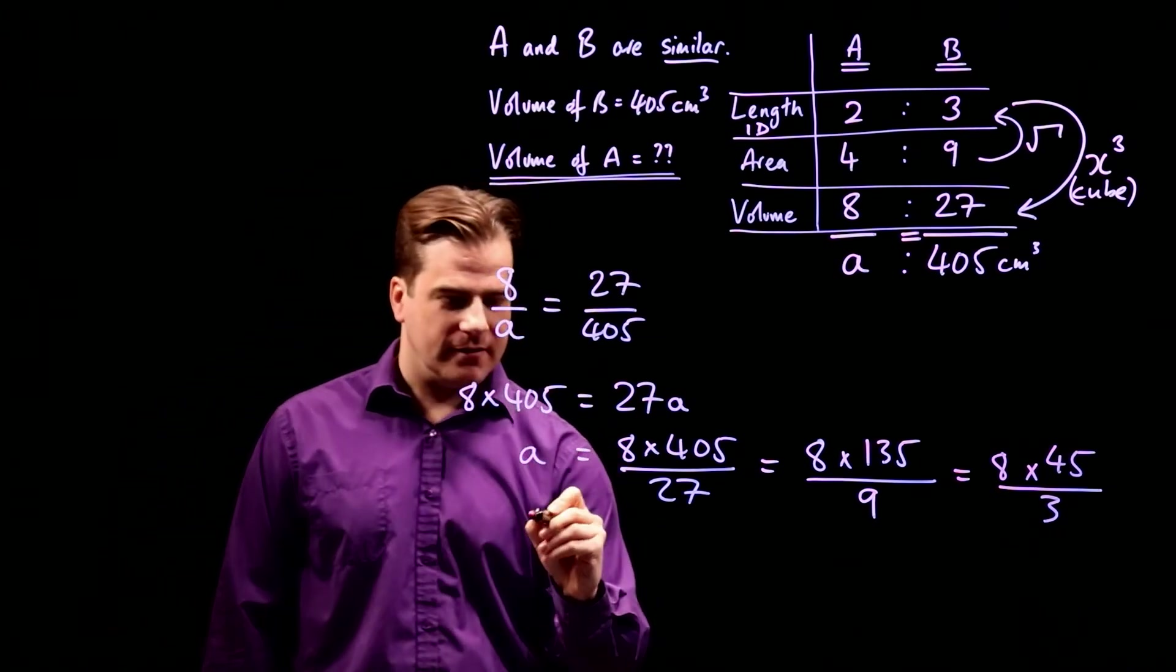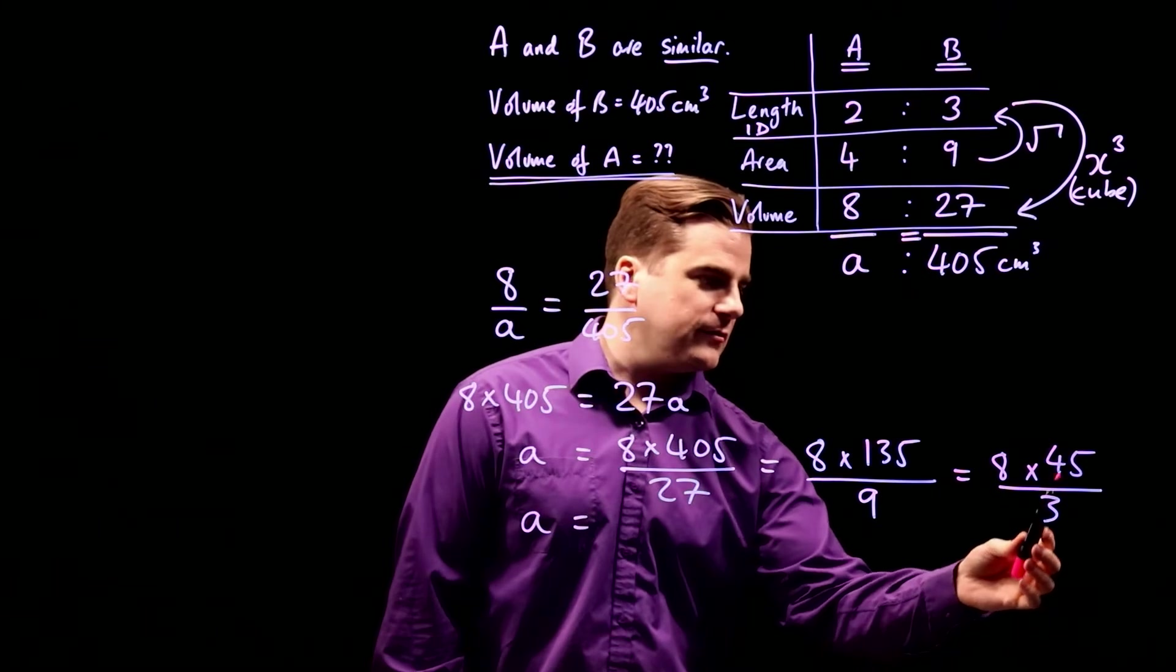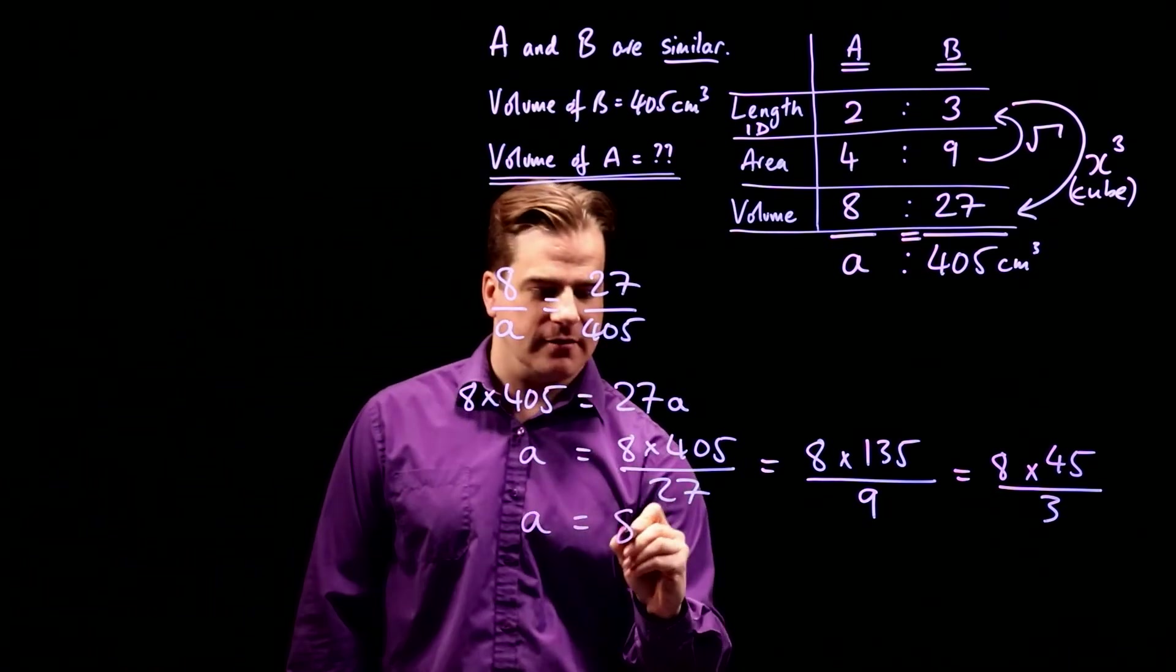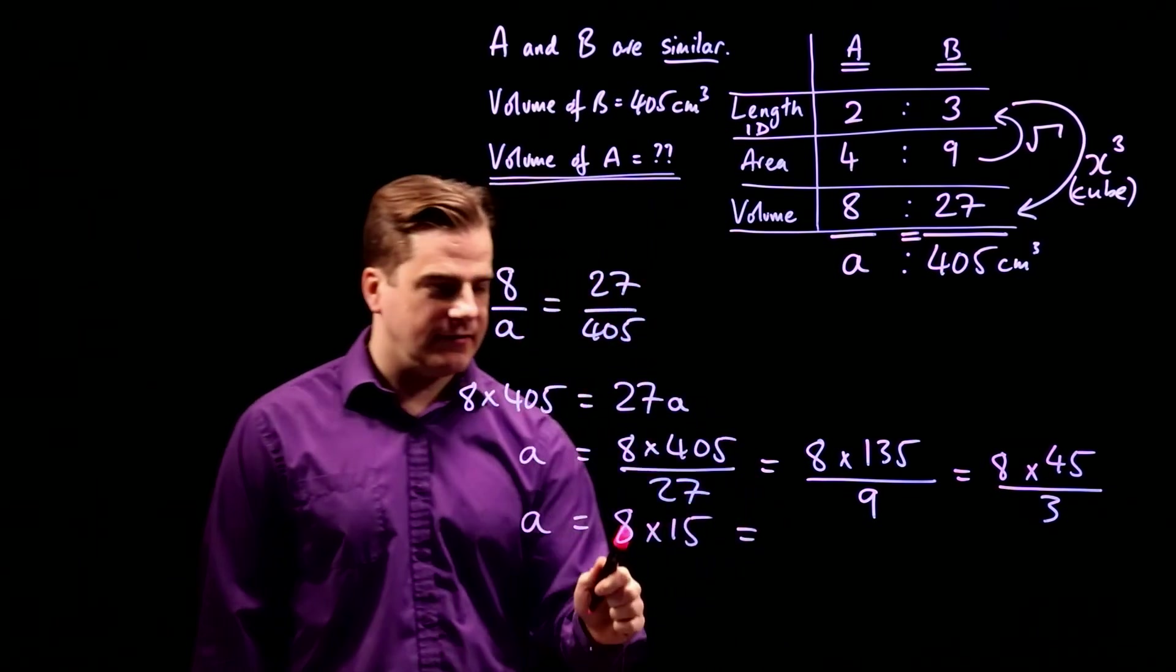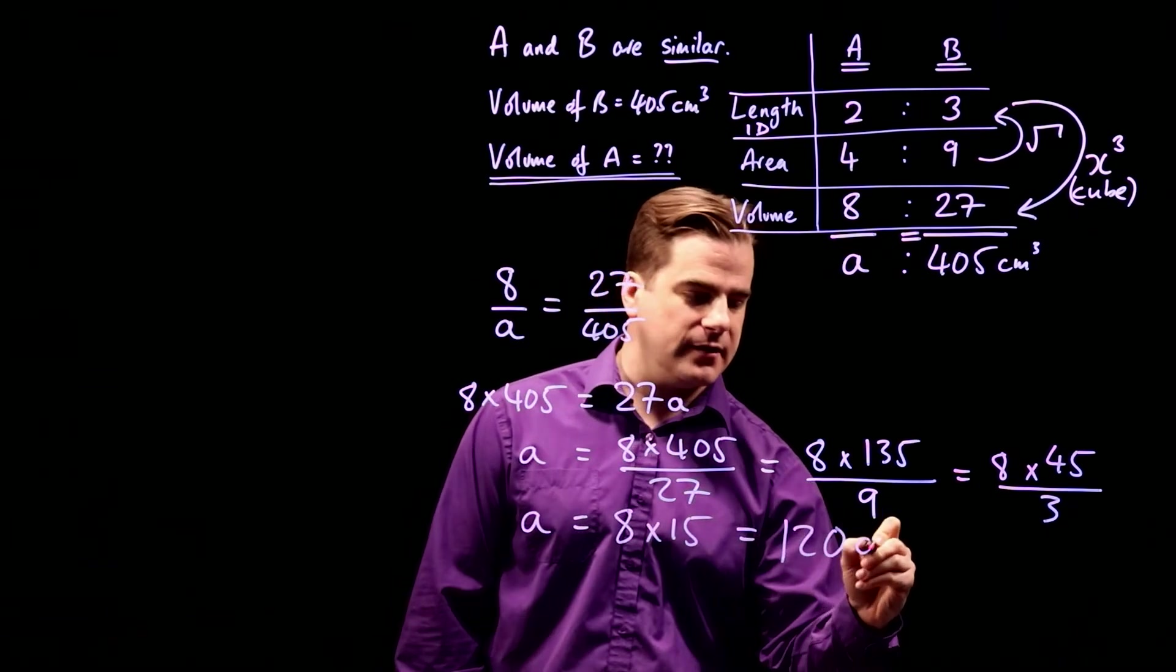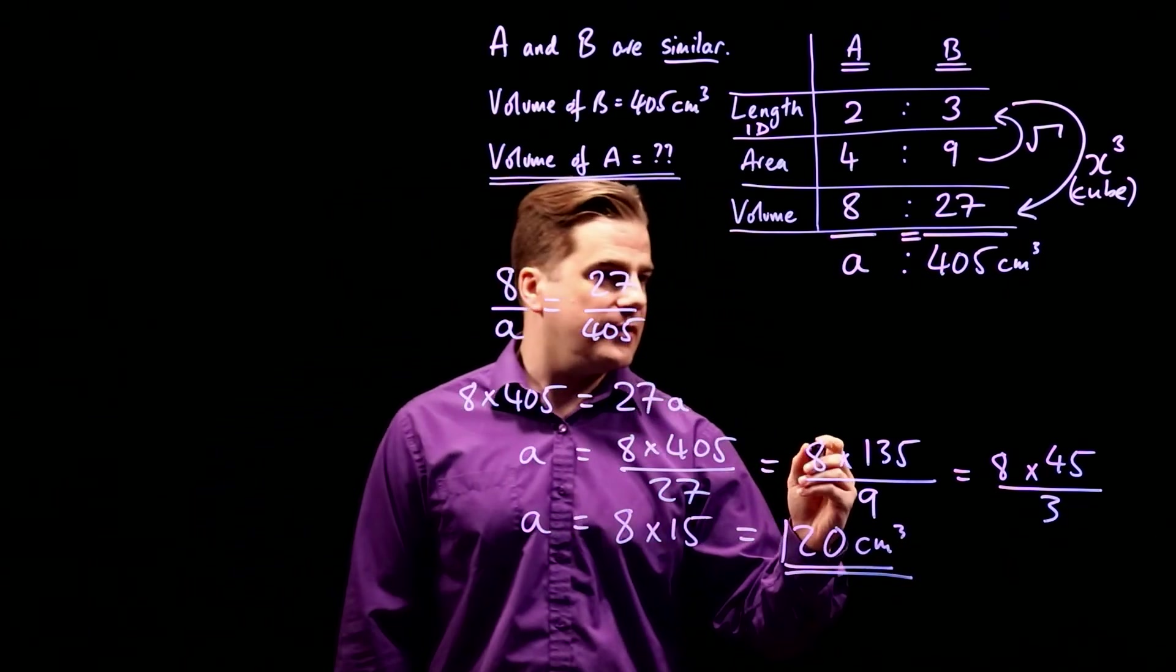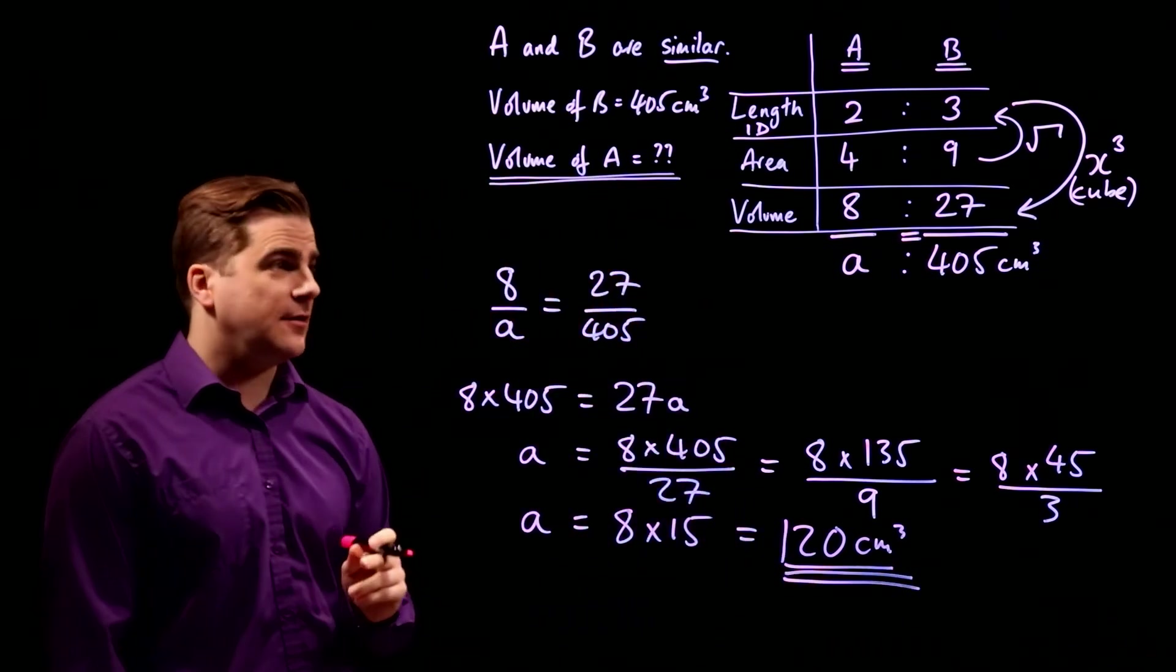And now we can do it because I can do 45 divided by 3. It's 15. So it becomes 8 times 15, which is 8 times 10 is 80, plus 8 times 5 is 40, equals 120 centimeters cubed. And that's how you do it.